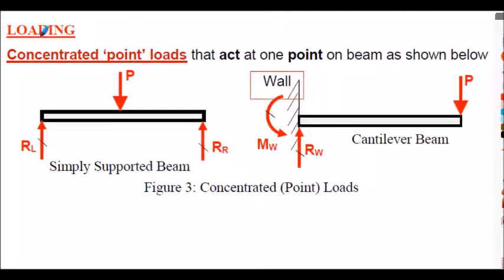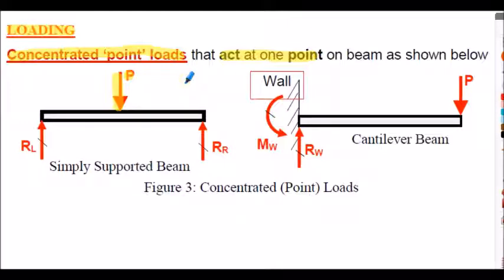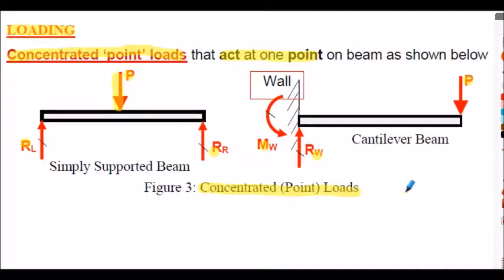I'm going to look at several types of loading. The first type is concentrated point loads, which literally act at a single point on the beam — think of it acting at a knife edge. A concentrated point load P acts at a discrete point. You can get more than one load applied to a beam of course.